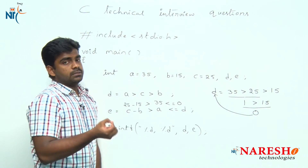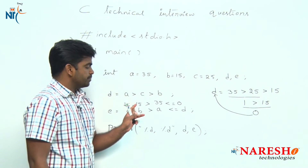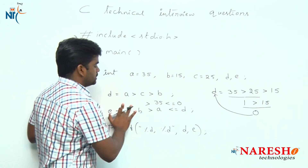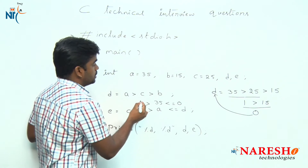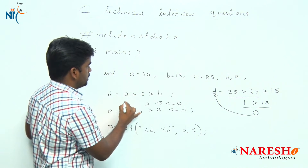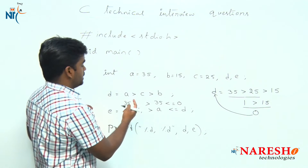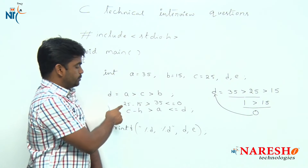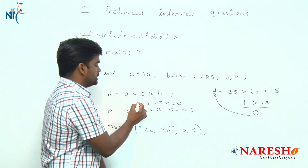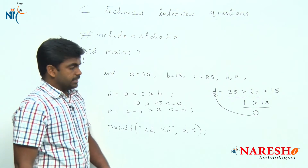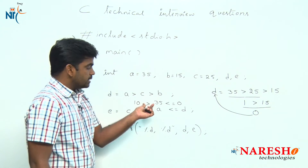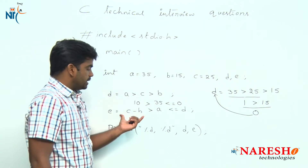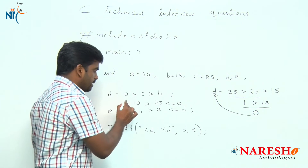We have two relational operators and one arithmetic operator. The arithmetic operator executes first. So 25 minus 15 executes first, giving the value 10. Now the remaining two relational operators are evaluated. Since all relational operators have equal priority, evaluation goes left to right, so first it executes 10 is greater than 35.